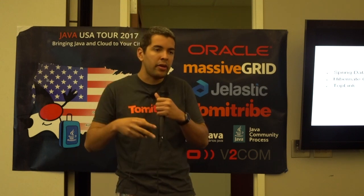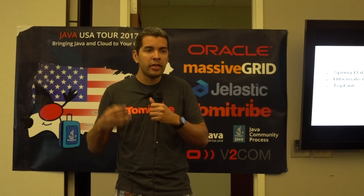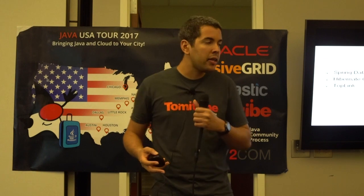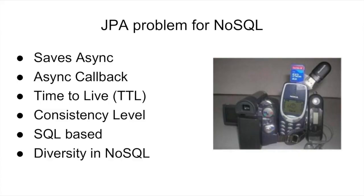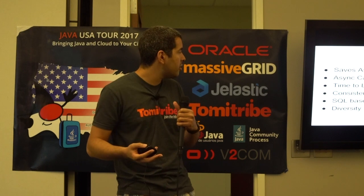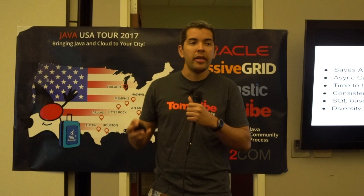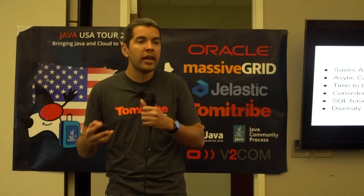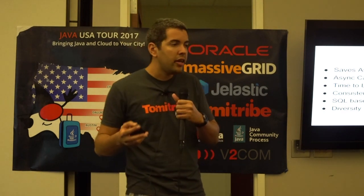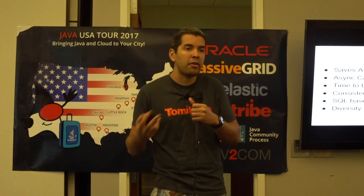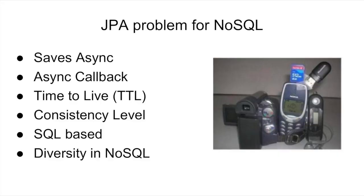To connect with Cassandra, to connect with MongoDB — that sounds like a nice idea because I don't need to learn a new API. But I have a problem using that, because the API was not made for NoSQL databases. So I cannot save asynchronously, I cannot use TTL — time to live. In NoSQL databases, we have a lot of diversity, and this diversity really matters. If I'm using Cassandra, I'd like to use Cassandra Query Language. If I'm using Couchbase, I'd like to use Live Query. If I'd like to use Elasticsearch, it has a search engine I'd like to use. And MongoDB has features that only MongoDB has. So specific behavior in NoSQL databases really matters.